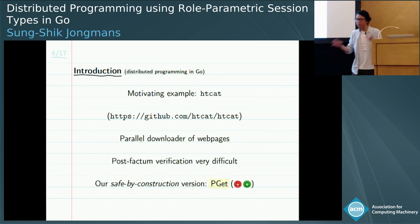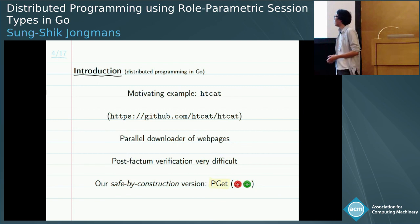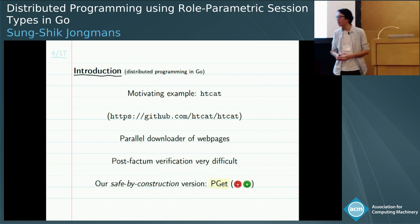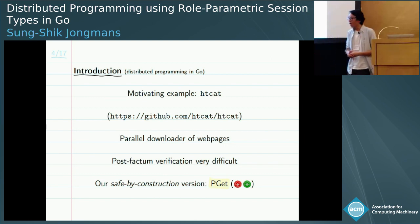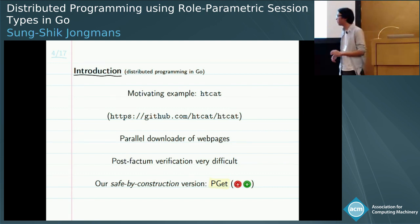I'd like to introduce some of the main challenges that distributed Go programmers face by means of an example called HTCAT. HTCAT is an existing real-world third-party application — essentially a modern version of curl. It allows users to download web pages, but the interesting thing is that internally it works in parallel, and this is where HTCAT derives much of its strong performance from.